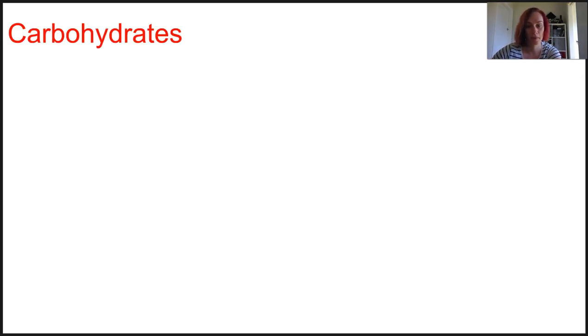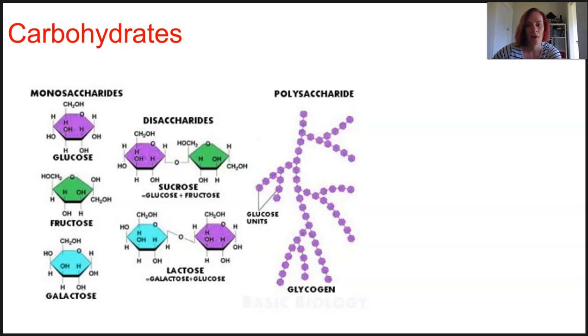The first type of macromolecule we'll talk about are carbohydrates. Carbohydrates are a type of energy store and they're used for cell to cell recognition and in structural components of DNA and RNA as well. They're made up of only carbons, hydrogens and oxygens. Their monomers are known as monosaccharides. They join together in twos to form disaccharides, and eventually they form really long polymers called polysaccharides.